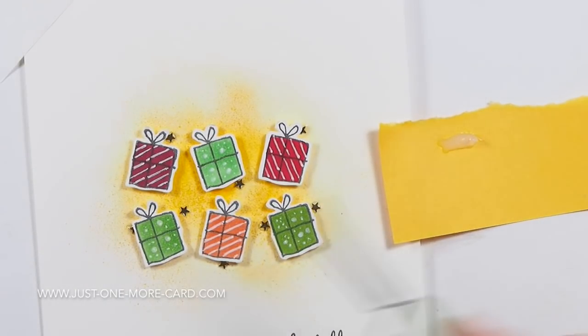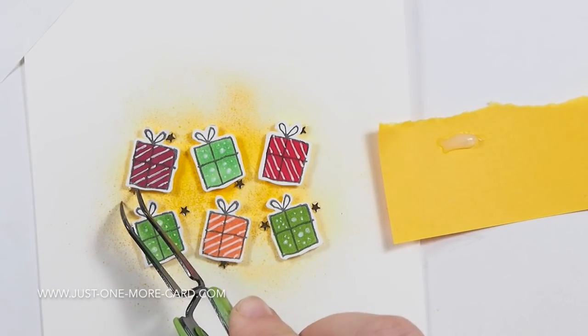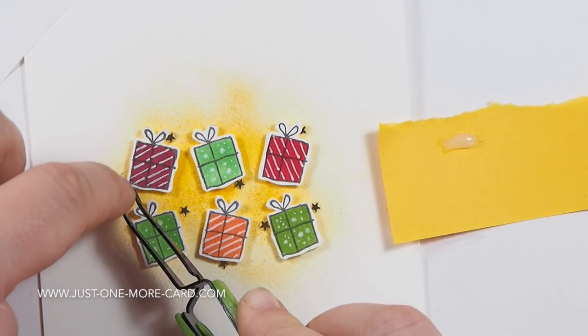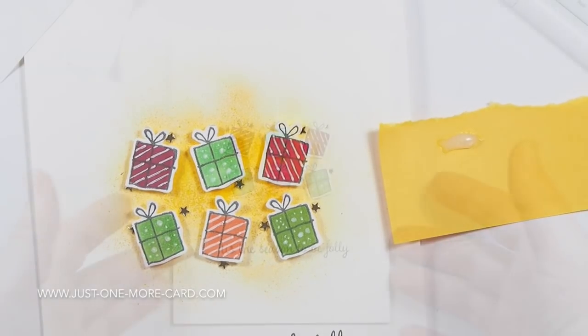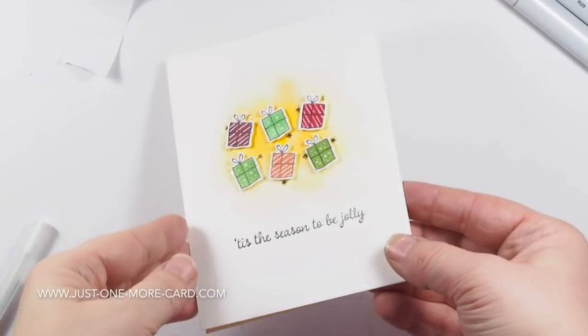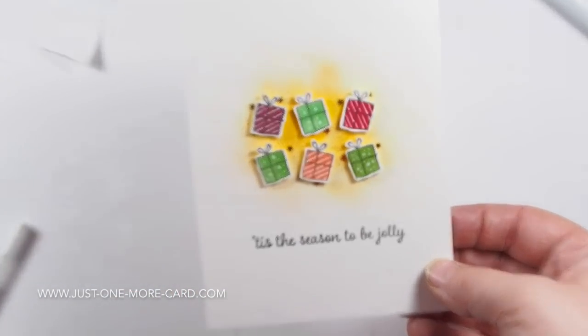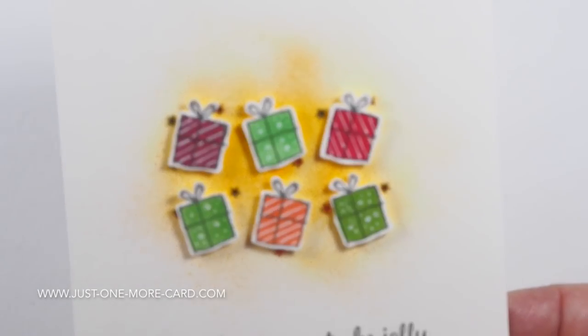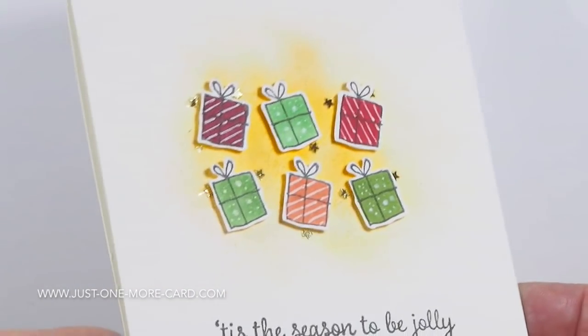I used a white gel pen to add some patterns to the packages here. So you can see, you don't have to do a lot of blending with your Copics if you add patterns with a gel pen anyway. And I added some tiny gold star sequins from Pretty Pink Posh, just for some additional sparkle. Because it looks pretty.